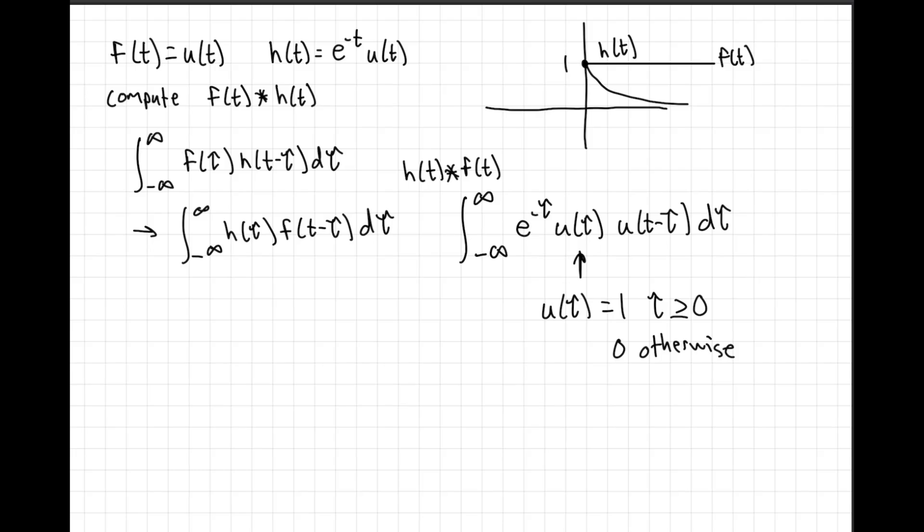Now what we can do is we can throw out everything for the tau bounds that are less than 0. So we can update our integration bounds to be 0 to infinity of e to the negative tau. And u of tau goes away because u of tau is just 1 for tau greater than 0. And then we have this multiplied by u of t minus tau d tau.